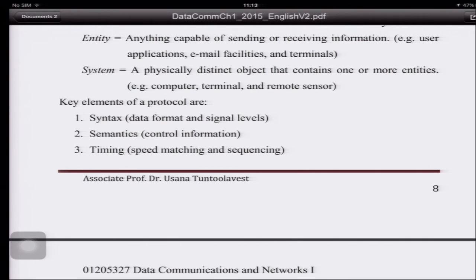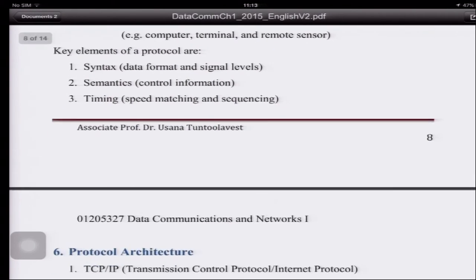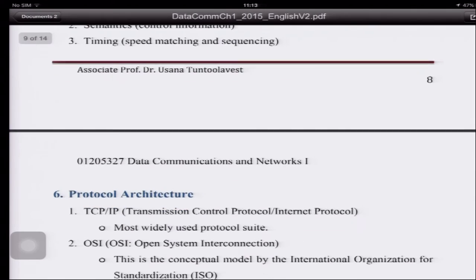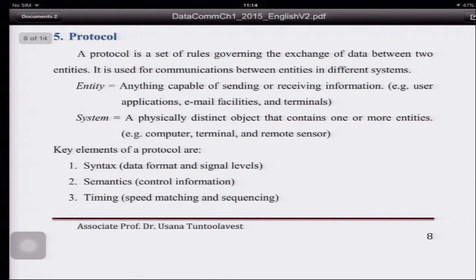Key elements of a protocol: syntax, semantics, and timing. Syntax is the data format and signal levels — for example, you use 3.3V as a one or 5V as a one, so the receiver knows what bit value it received. Semantics is the control information added in a header to specify the address, commands like go to this destination or do that — this is not the actual data. Timing is about speed matching and sequencing. Different protocols have different formats, control information, and timing systems.